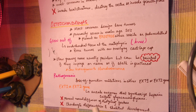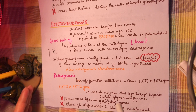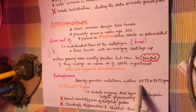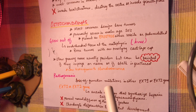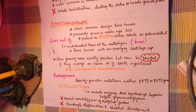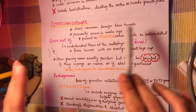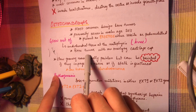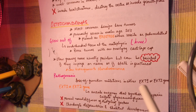Histologically, osteochondromas show a clear cartilage cap — they are bone tumors with an overlying cartilage cap. They are slow-growing masses that are usually painless, but can be painful if they impinge a nerve, if the stalk is fractured, or if there is trauma.